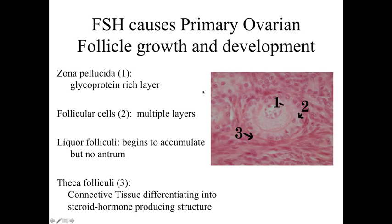In response to follicle stimulating hormone released by the pituitary, some of these primordial follicles are going to develop into primary ovarian follicles. We still have the oocyte present — large cell, very euchromatic nucleus — but the follicular cells have started to respond. They're no longer flattened squamous cells; we start to see multiple layers and they're going to be either round or cuboidal in appearance. These follicular cells are going to become larger and start to produce more and more cells.